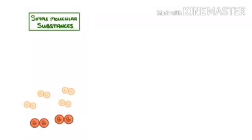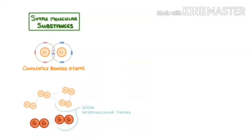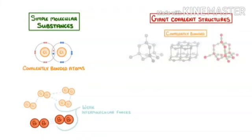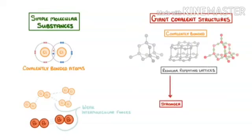This results in high melting and boiling points. In case of simple molecular substances, there are weak intermolecular forces of attraction. Therefore, they have lower melting and boiling points compared to giant covalent structures or polymers.